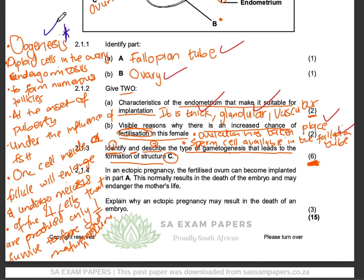So the marking is: one compulsory mark for oogenesis, then five marks for the process — diploid cells in the ovary undergo mitosis to form numerous follicles; at the onset of puberty under the influence of FSH, one cell inside the follicle enlarges and undergoes meiosis; of the four cells produced, only one survives to form a haploid ovum. You do not skip these questions at all.